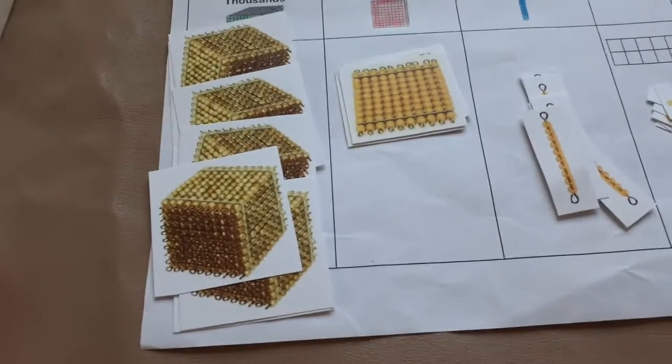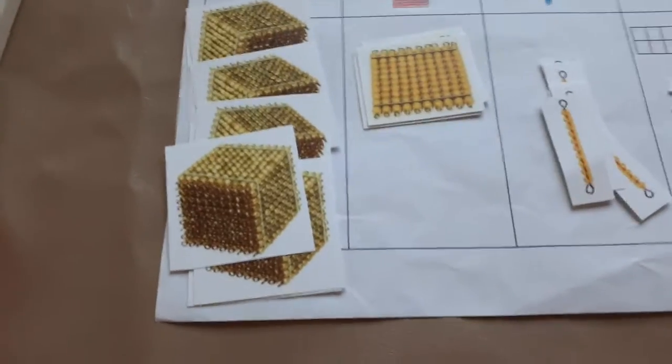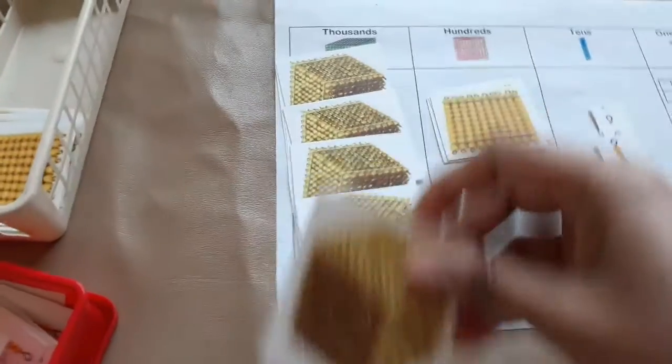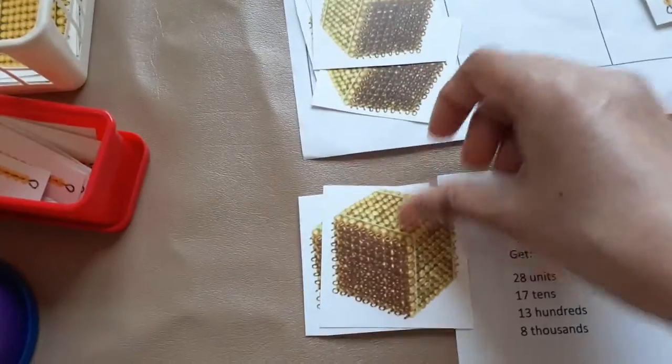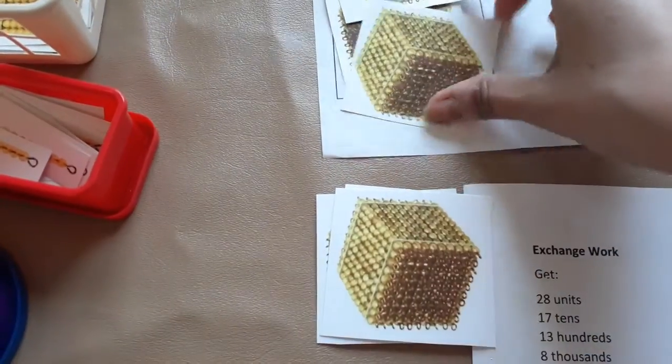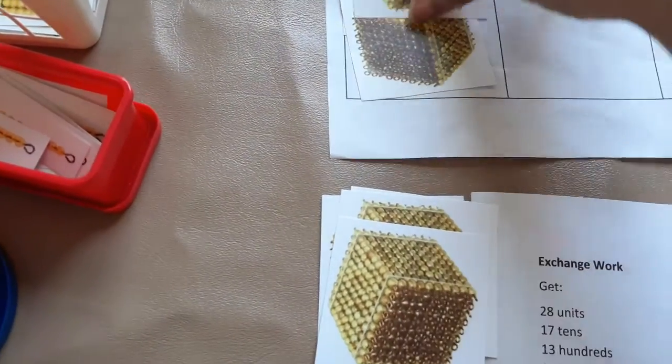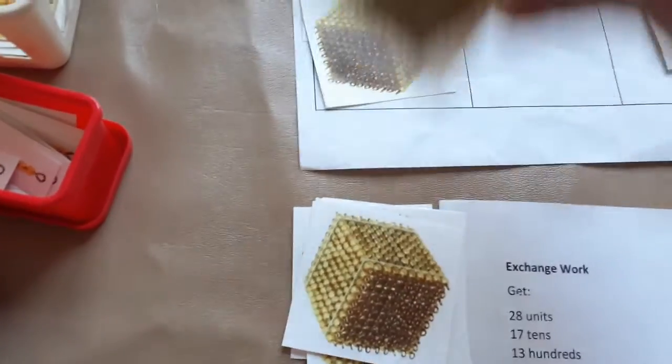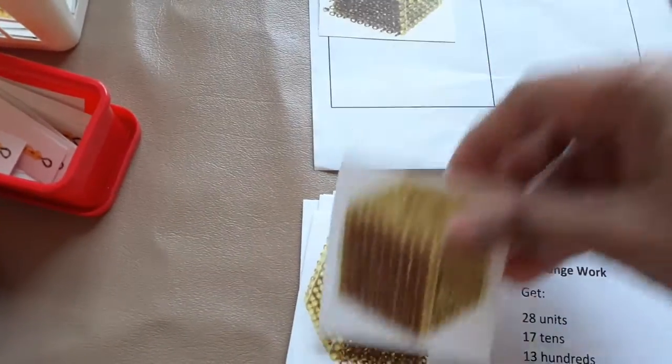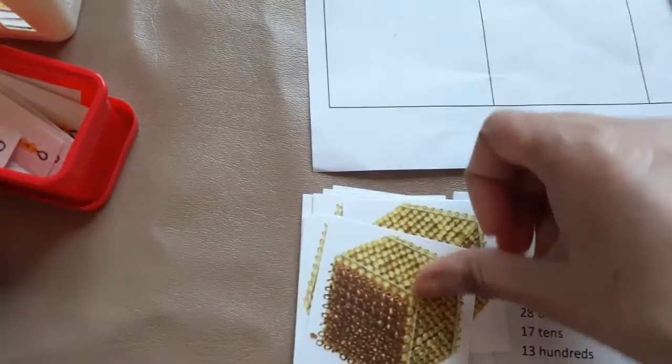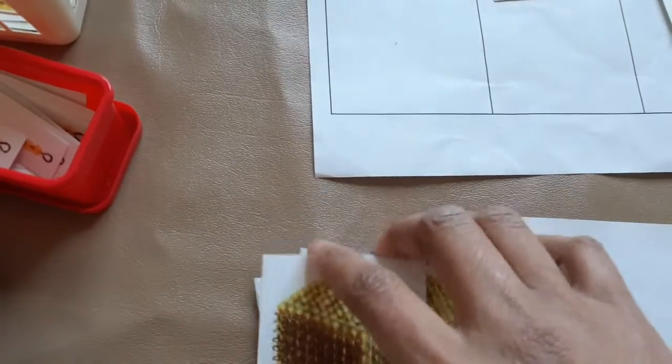Now, I'm going to see how many thousands I have. 1,000, 2,000, 3,000, 4,000, 5,000, 6,000, 7,000, 8,000, and 9,000.